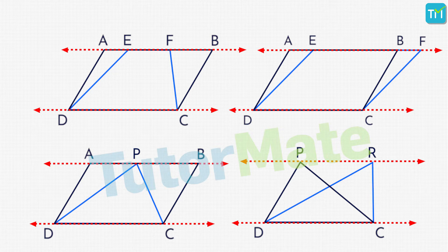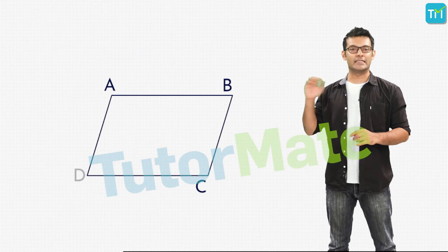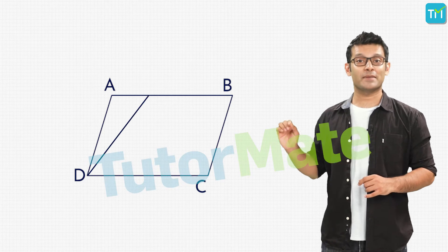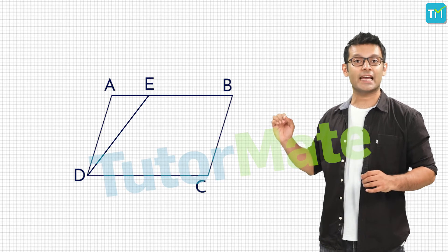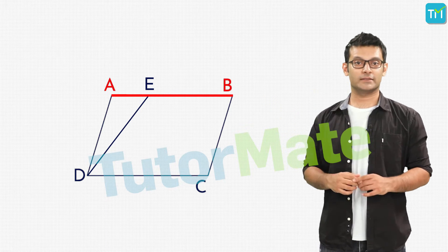Okay, let's have some more fun with such figures. We have a parallelogram ABCD. Now, we'll draw any random segment DE such that E lies on the side AB between the vertices A and B.